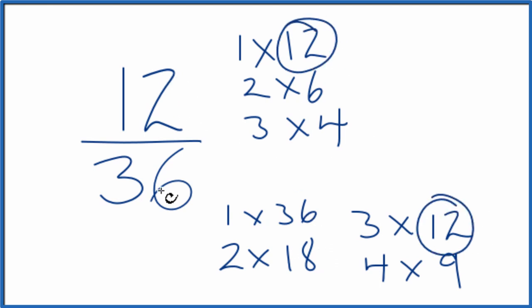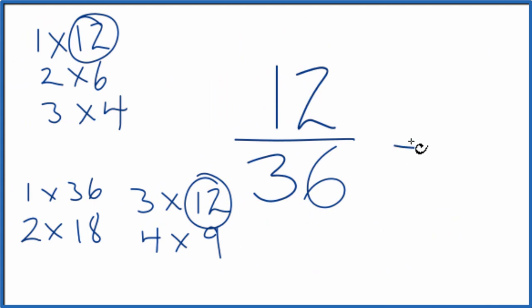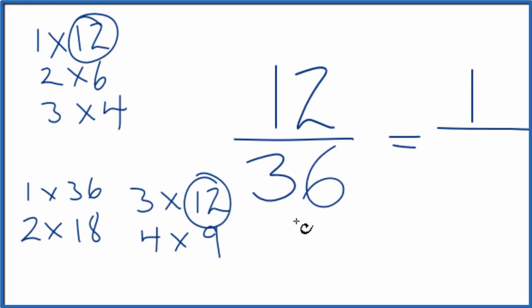So we divide 12 by 12, 36 by 12. We'll have simplified 12 over 36. Let's move this over here. So we divide 12 by 12. That'll give us one. We divide 36 by 12. That gives us three.